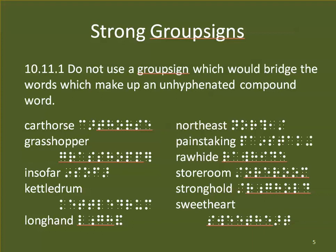Another rule: we do not use a group sign which would bridge the words making up an unhyphenated compound word. Sometimes it's a double whammy, like 'carthorse' — we're aspirating the H and it's also two words making an unhyphenated compound. So we definitely do not use the TH there. Grasshopper — same thing. Insofar — not using the OF contraction. Kettledrum — two separate words made into a compound, not using ED. Longhand — double whammy, not using GH. Northeast — not using the THE contraction, but we can use the EA contraction. Painstaking — not using ST. Rawhide — not using WH. Storeroom — not using ER. Stronghold — not using GH. Sweetheart — not using THE, but we can use the AR contraction in the 'heart' part of the word.